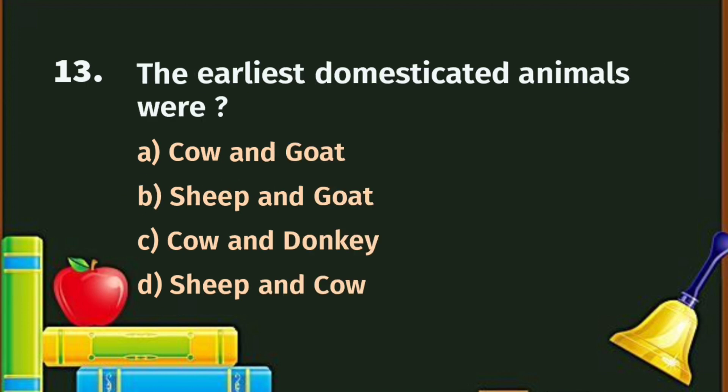Question number 13. The earliest domesticated animals were: A. Cow and goat, B. Sheep and goat, C. Cow and donkey, D. Sheep and cow. The correct answer is B - Sheep and goat.